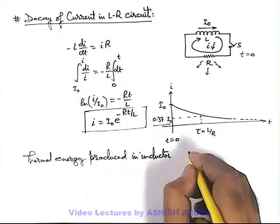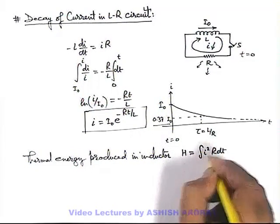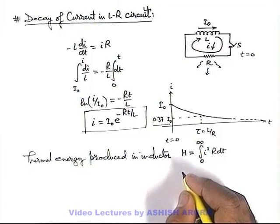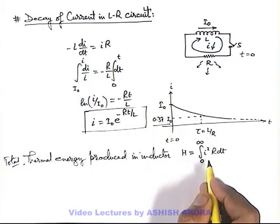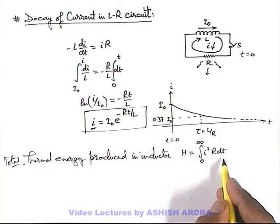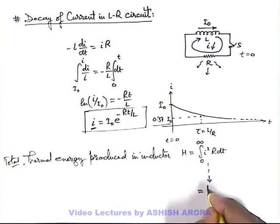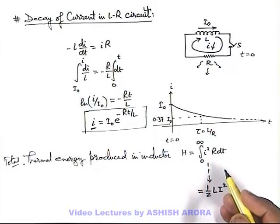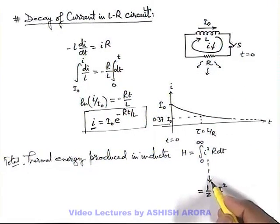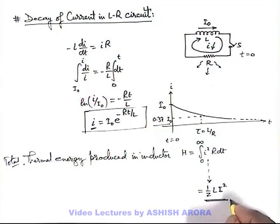The thermal energy produced can be written as total heat H = ∫₀^∞ i²R dt. If we substitute the value of i and integrate, the value of this integral will come out as (1/2)Li₀². This is because it was the energy stored in the inductor which was supplying this thermal energy. I am leaving this integration as an exercise for you to solve and verify the result.